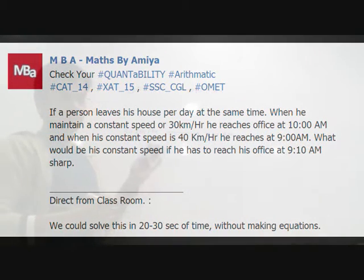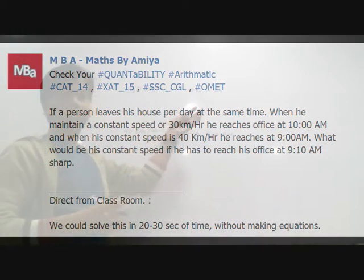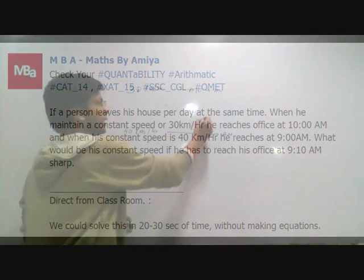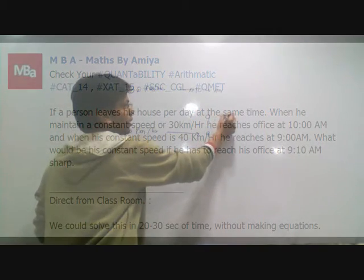In the question, the two data are the same: 30 km per hour, 9:10 AM, and 40 km per hour, 9 AM. What would be our speed if you have to reach at 9:10?